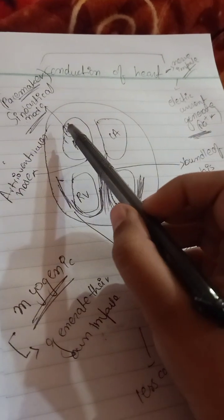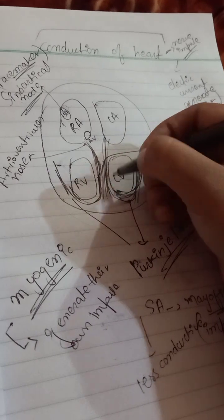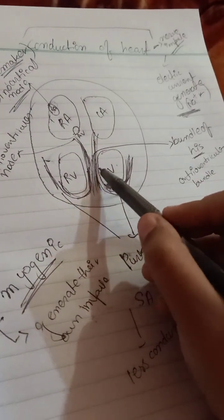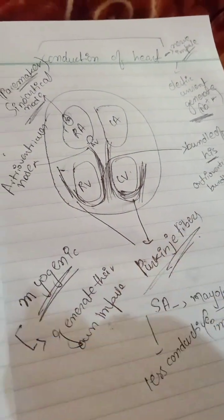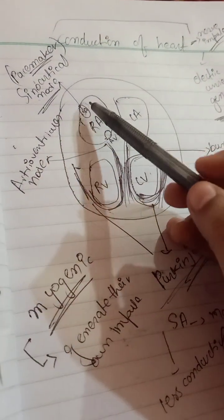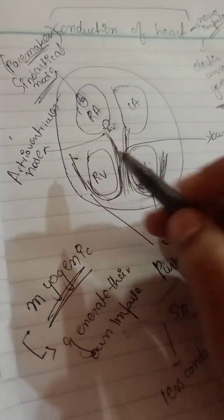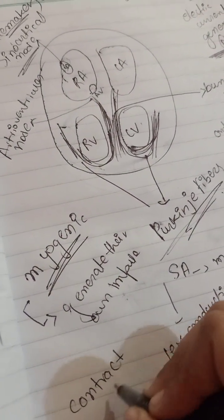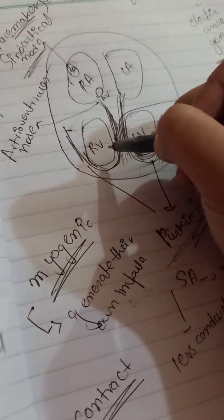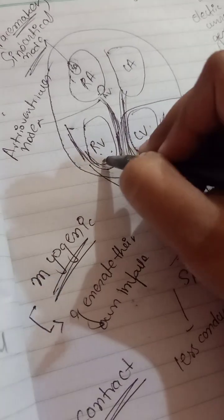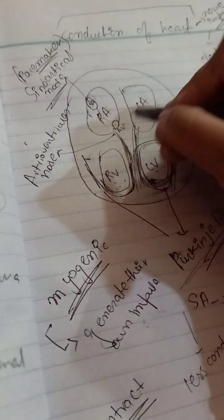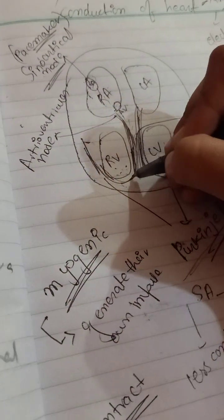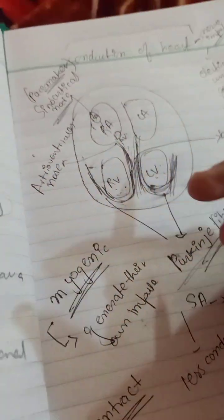From the AV node, fibers come out called the Bundle of His, which is further divided into right and left fibers called the Purkinje fibers. When the right atrium and left atrium contract, the signal generated by the SA node travels to the AV node, then to the Bundle of His, and then to the Purkinje fibers.